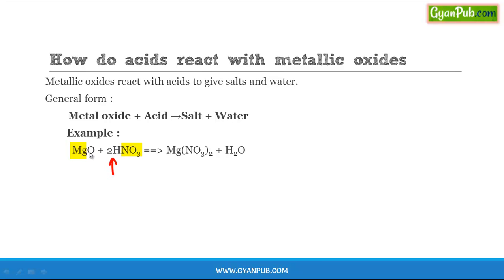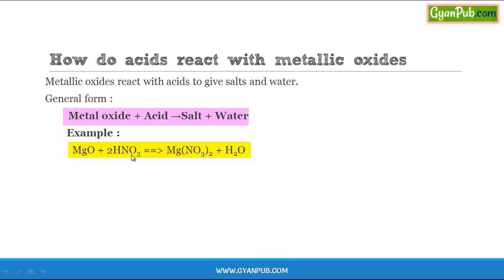The displaced hydrogen combines with the oxygen in the magnesium oxide to form water. So, the metal displaces hydrogen from the acid and combines with the remaining part of the acid to form a salt, and the displaced hydrogen combines with the oxygen in the metal oxide to form water.